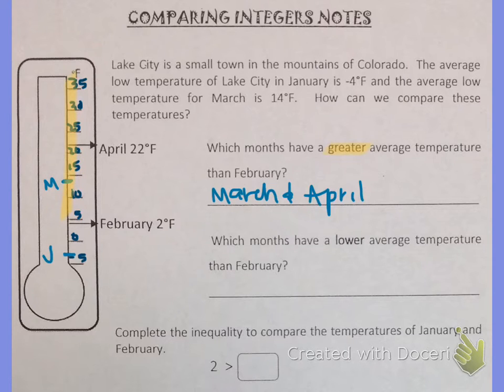Using the same thermometer we can answer the next question which is which months have a lower average temperature than February. And that would be anything below February on the thermometer. And the only month that's below February on the thermometer is January.